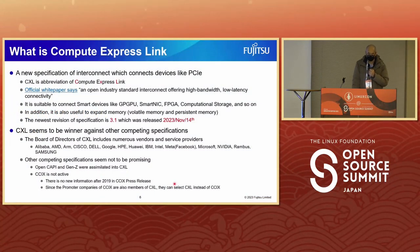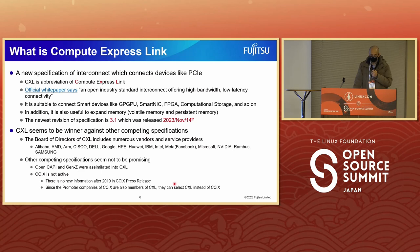What is Compute Express Link? It's a new specification for an interconnect that connects devices like PCI Express. CXL is an abbreviation of Compute Express Link. The official white paper says it's an open industry standard interconnect offering high bandwidth and low latency connectivity. It's suitable for connecting smart devices like GPGPU, SmartNIC, FPGA, and compute storage, and it's also useful to expand volatile memory and persistent memory. The newest revision is 3.1.